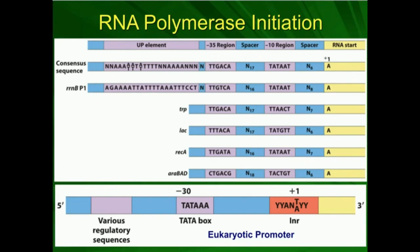The minus 10 region is 10 bases upstream from the start site, and sequences there are generally fairly similar. We have another spacer, usually from about 16 to 18 nucleotides, and the minus 35 region, where the identity of the bases does not vary a lot. The relative homology in the minus 35 and minus 10 regions for different organisms plays a huge role, because these regions allow different proteins to bind.